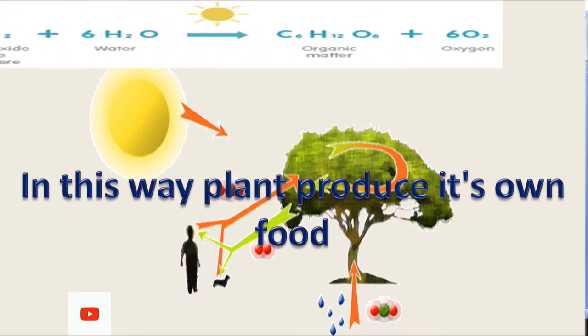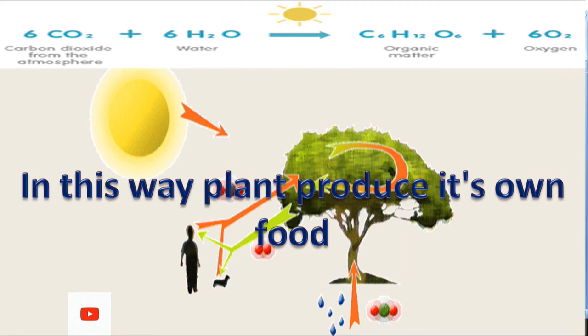The chemical reaction takes place inside the plastid. Six molecules of carbon dioxide combined with six molecules of water in presence of light produce organic matter starch and six molecules of oxygen.